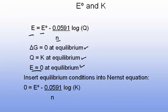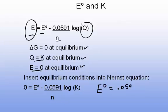We can insert these values, E is zero and Q is K at equilibrium, and derive a new equation which relates the equilibrium constant to the standard potential. That is, the standard cell potential equals 0.0591 divided by n times the log base 10 of K.